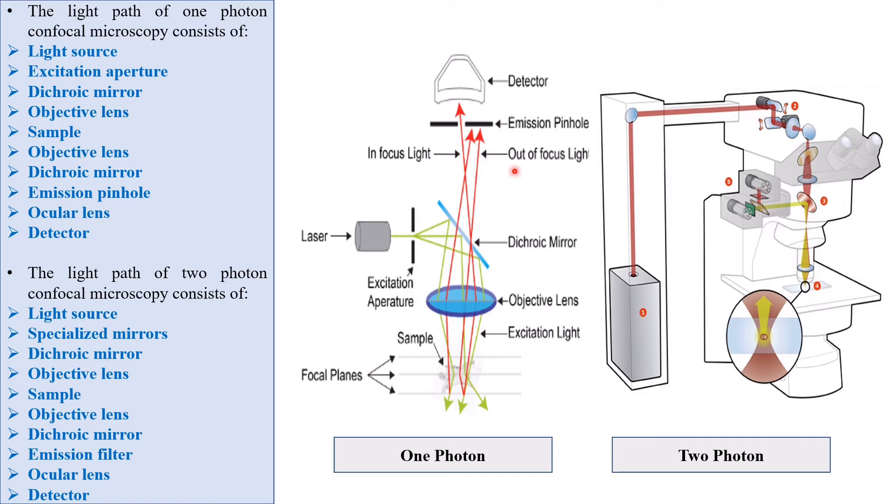Light source is the first difference. One photon confocal microscope uses UV or visible rays to excite a sample, whereas two photon confocal microscope uses infrared rays. One photon confocal microscope uses two pinhole systems: one before the dichroic mirror, another before the detection system.